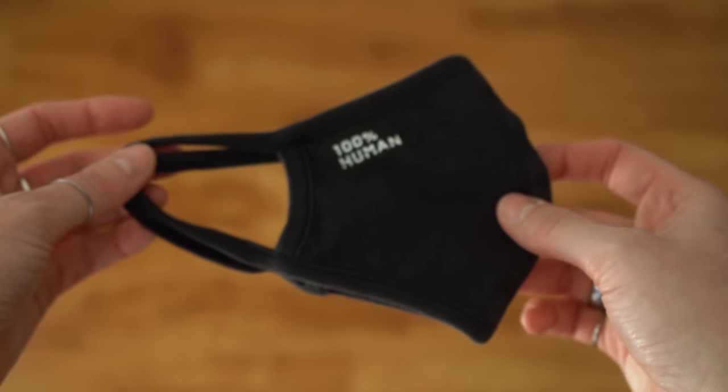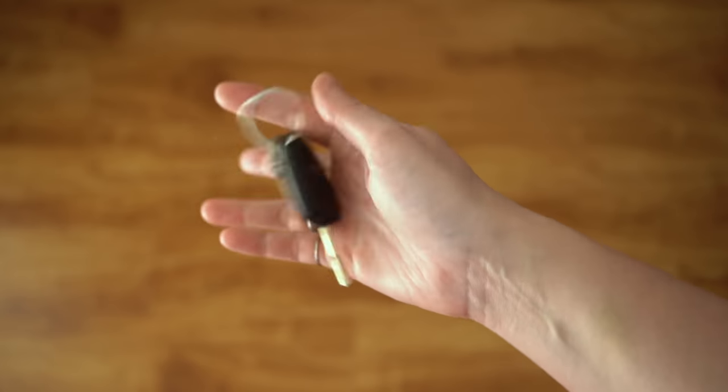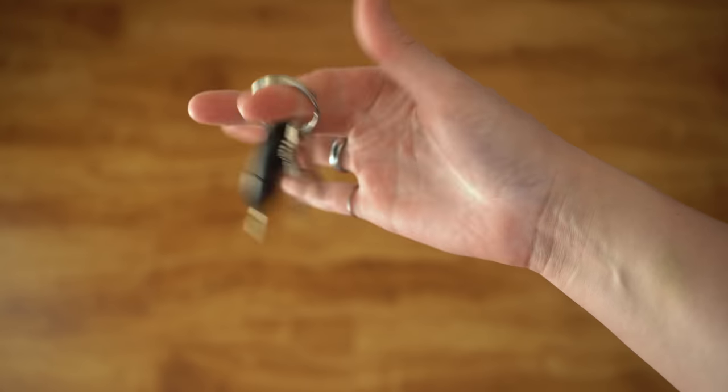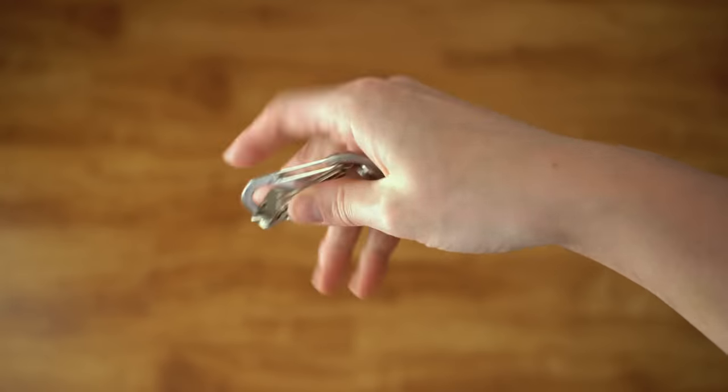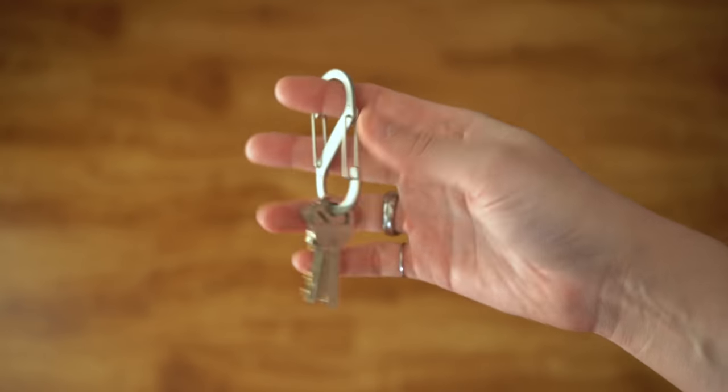I currently carry two keys to get into my building along with the key to my van, but I am planning on selling my van soon. So then I'll just be carrying two keys and I'll be able to carry it on this carabiner.